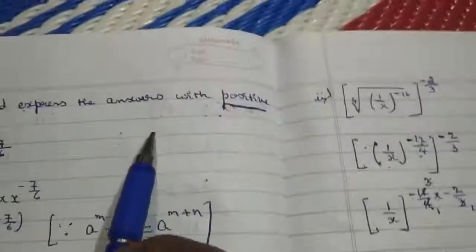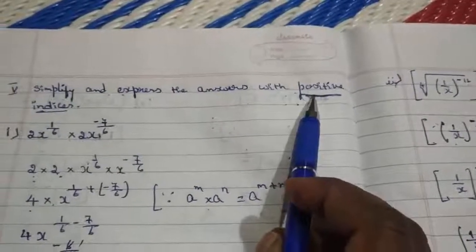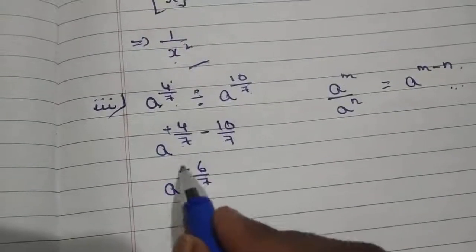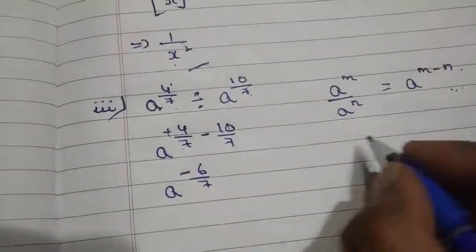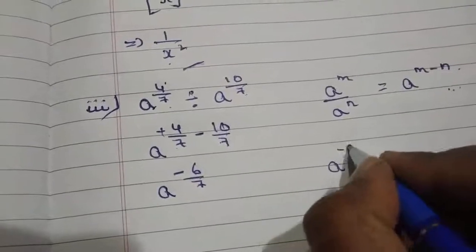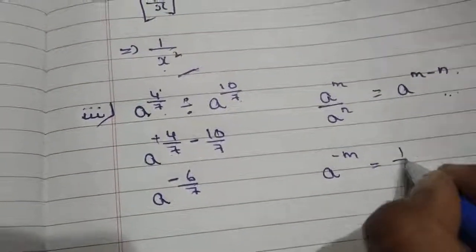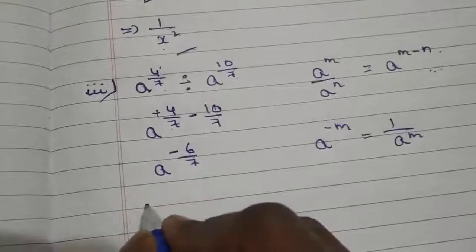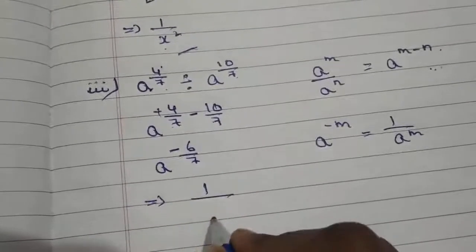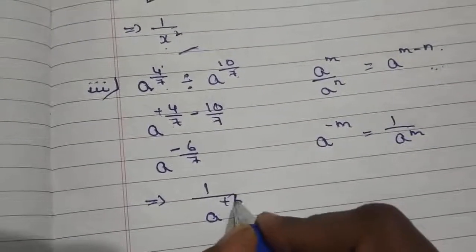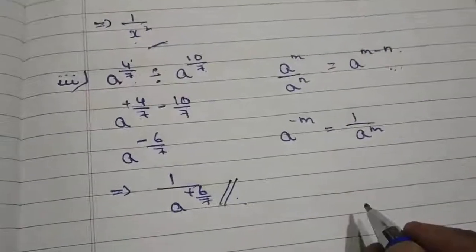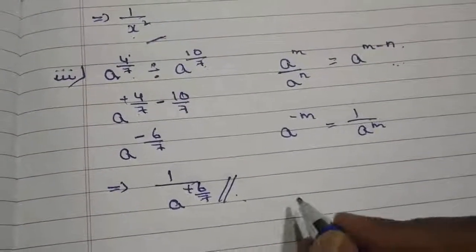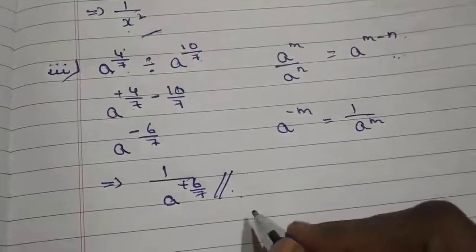Since the question asks for positive indices, we convert this by applying the law: a to the power of minus m equals 1 by a to the power of m, which gives 1 divided by a to the power of 6 by 7. The remaining questions will be discussed in the next class. Thank you.